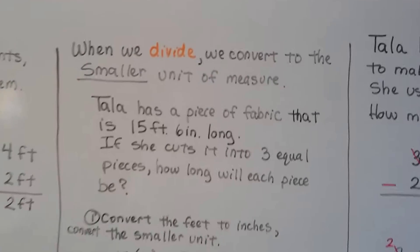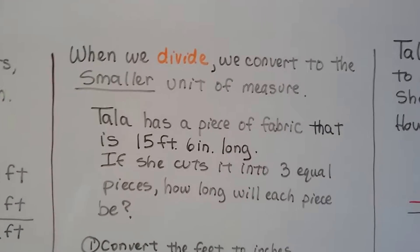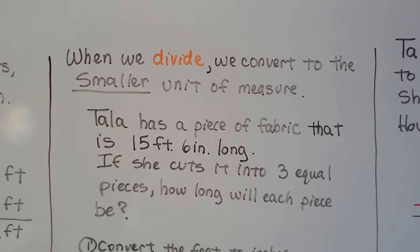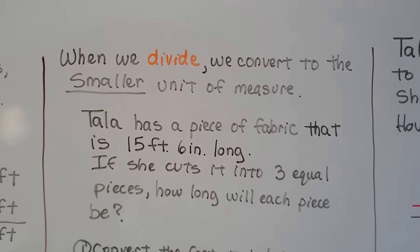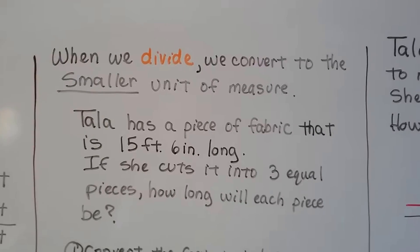When we divide, we convert to the smaller unit of measure. So Tala has a piece of fabric that's 15 feet 6 inches long and she cuts it into 3 equal pieces. How long will each piece be?